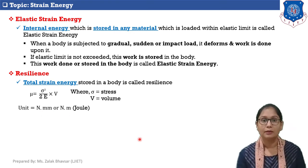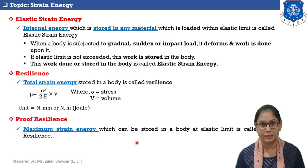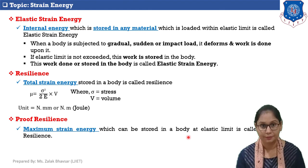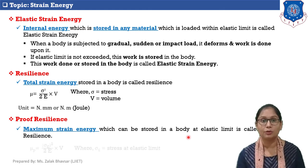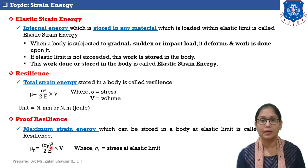The maximum strain energy which can be stored in a body at the elastic limit is called proof resilience. Proof resilience is denoted by mu_p, and the equation to calculate proof resilience is sigma_e squared upon 2E into V, where sigma_e is the stress at the elastic limit.